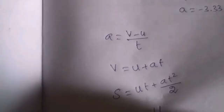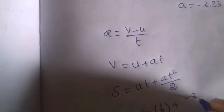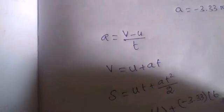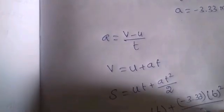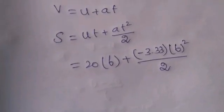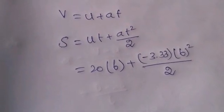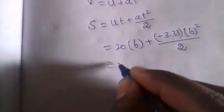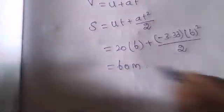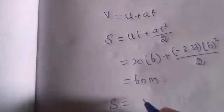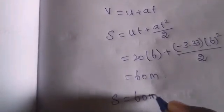Now substitute values. U, initial value, is 20 meters per second. 20 into 6 plus acceleration minus 3.33 into t squared, 6 squared, divided by 2. If we simplify this, we get 60 meters. Distance traveled after brake applied is 60 meters.